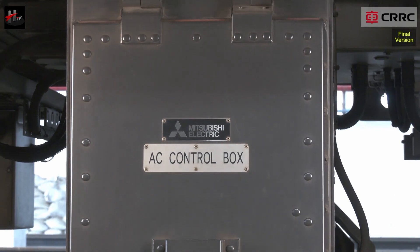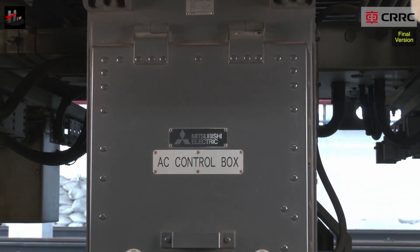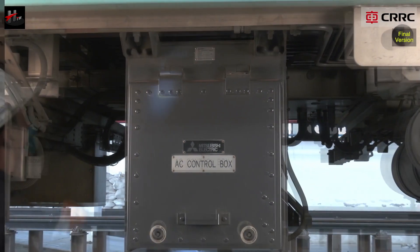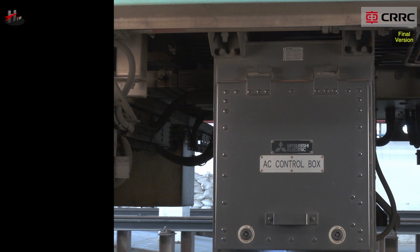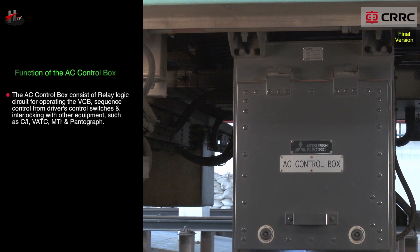The AC control box is a component of the propulsion system and is located in the underframe of each DT car. The AC control box consists of the relay logic circuits for the operating of VCB, sequence control from driver's control switches, and interlocking with other equipment like the CI, VATC, main transformer, and the pantograph.